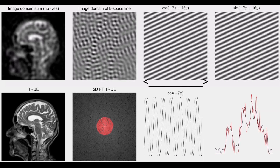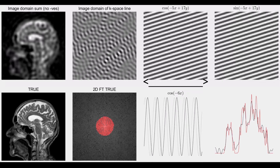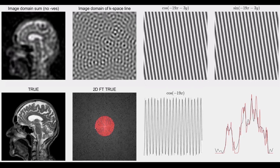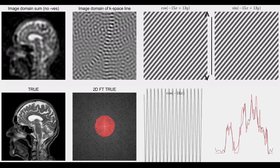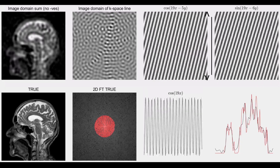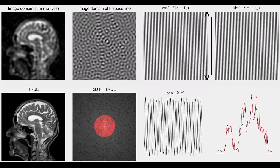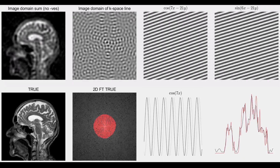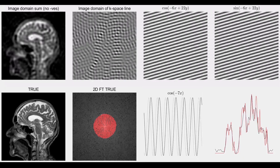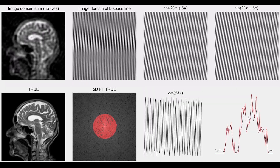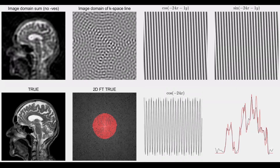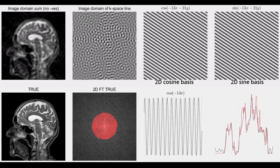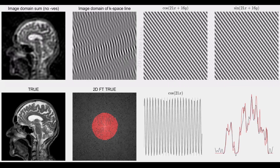KX corresponds to the number of cosines or sines that fit from left to right in the horizontal field of view. KY corresponds to the number of cosines or sines that fit from top to bottom in the Y direction, the vertical direction of that field of view. As we orbit around that circle, we can see we're considering different KX and different KY values, which result in different looking cosine and sine 2D basis functions shown in the top right of the display.